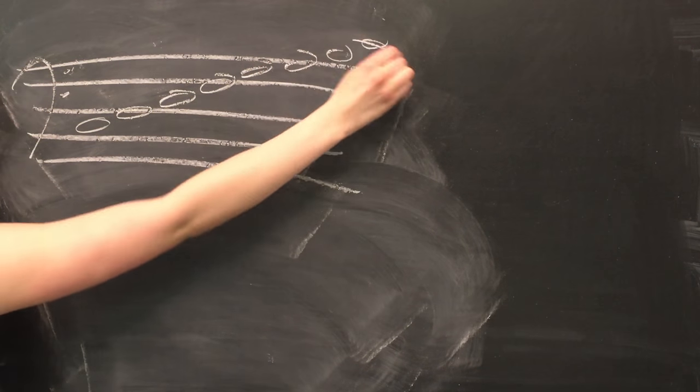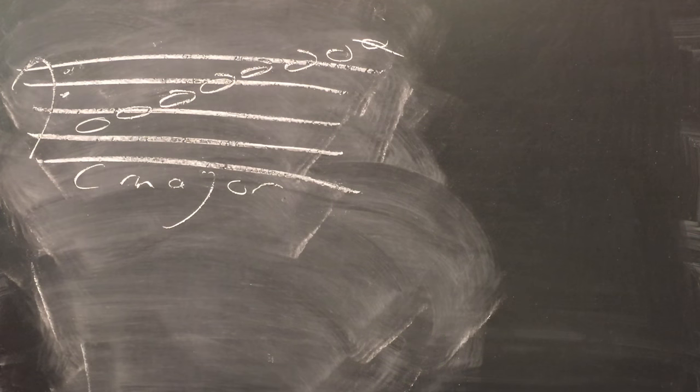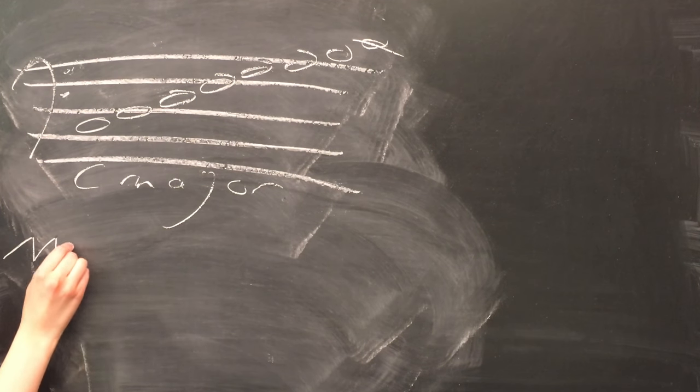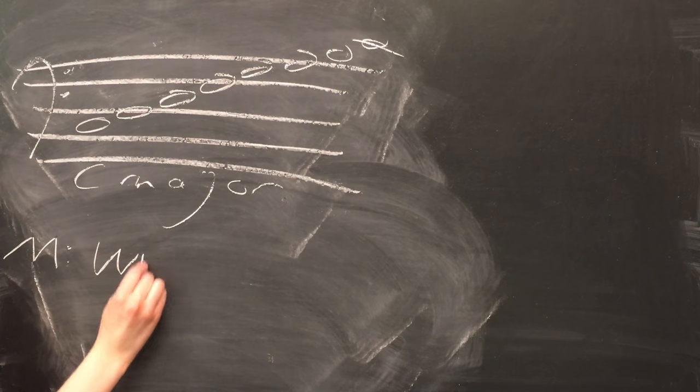The series of intervals comprising the major scale is as follows: whole-step, whole-step, half-step, whole-step, whole-step, whole-step, half-step, where a whole-step is two half-steps.